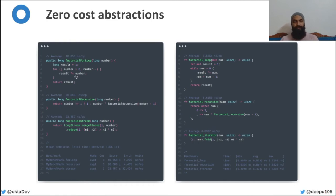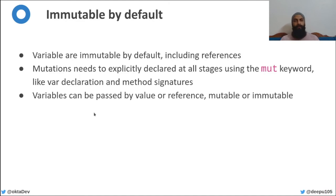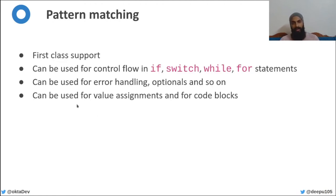Rust is also immutable by default and mutations have to be declared explicitly. This, along with the ability to pass by value or reference, makes it super easy to write functional code without side effects. Rust also has excellent support for advanced pattern matching, which is used extensively for error handling and control flows throughout the standard library.